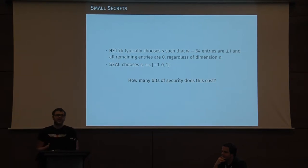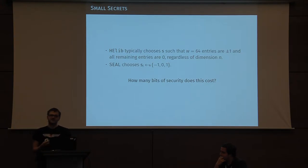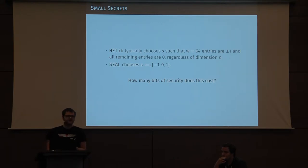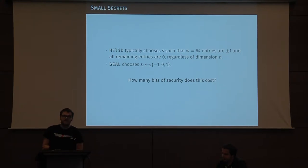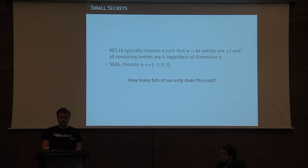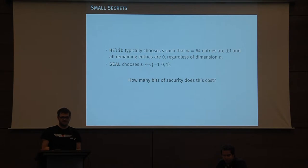What these libraries do is they don't pick the secret as I've just described. The secret is neither uniformly random nor does it follow the normal form, i.e., the error distribution. In particular, HElib chooses the secret such that there are 64 entries which are non-zero — so they're minus 1, 0, or 1 — and every other entry, regardless of dimension n, will be zero. So it's very sparse.